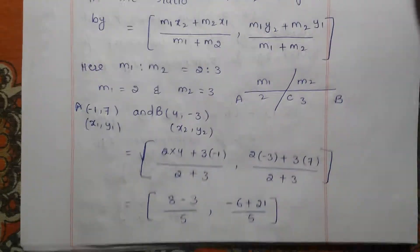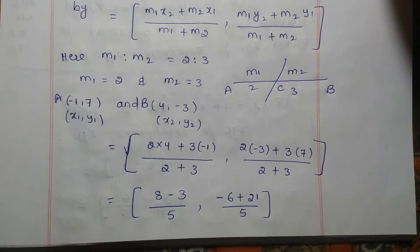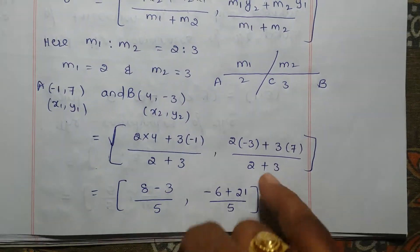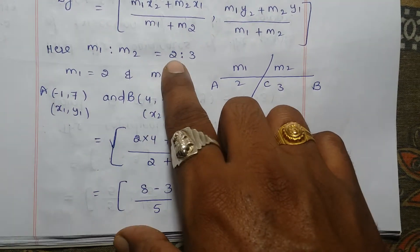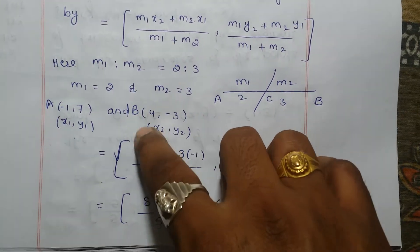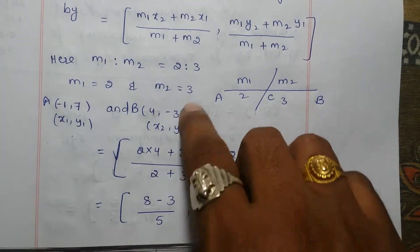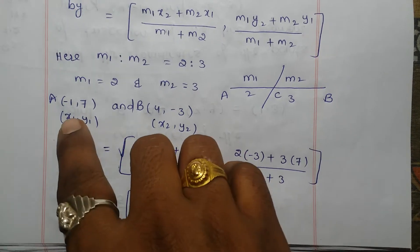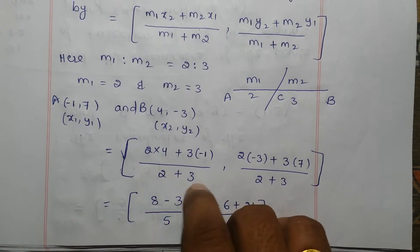This is the section formula. So now we will substitute all the values in our formula. m1 is 2, x2 is 4, so 2 into 4; plus m2 is 3, x1 is −1; divided by m1 + m2, which is 2 + 3.